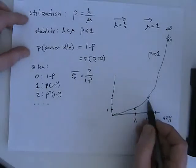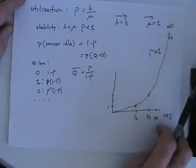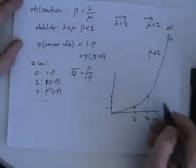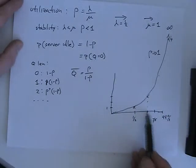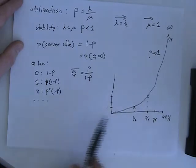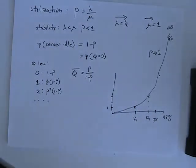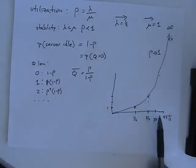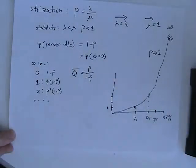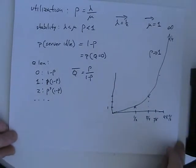This is a somewhat non-intuitive result. With utilization of 3/4, a quarter of the time is still free, but the average queue length is still 3. At 7/8 it's 7, at 99% it's 99. The queue length tends toward infinity as rho approaches 1. If you really do have memoryless arrivals, your delay increases without bound as you approach 100% utilization.